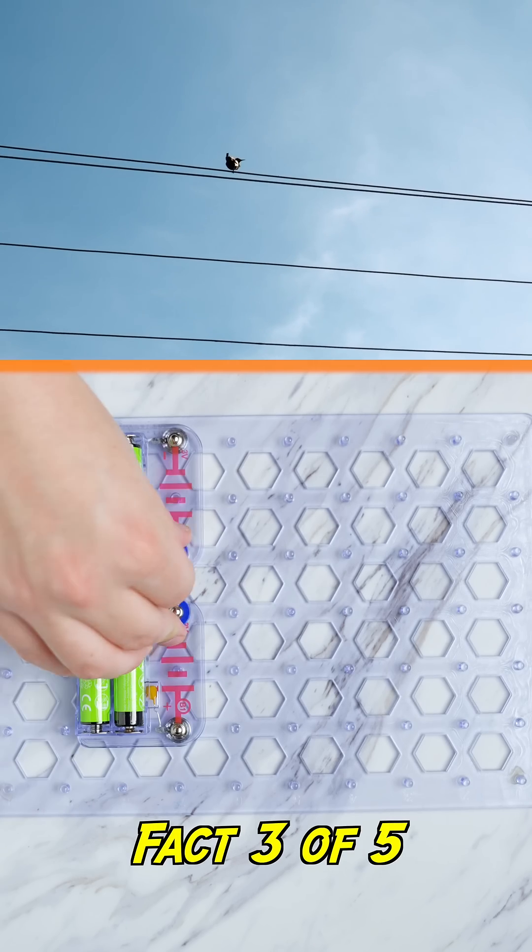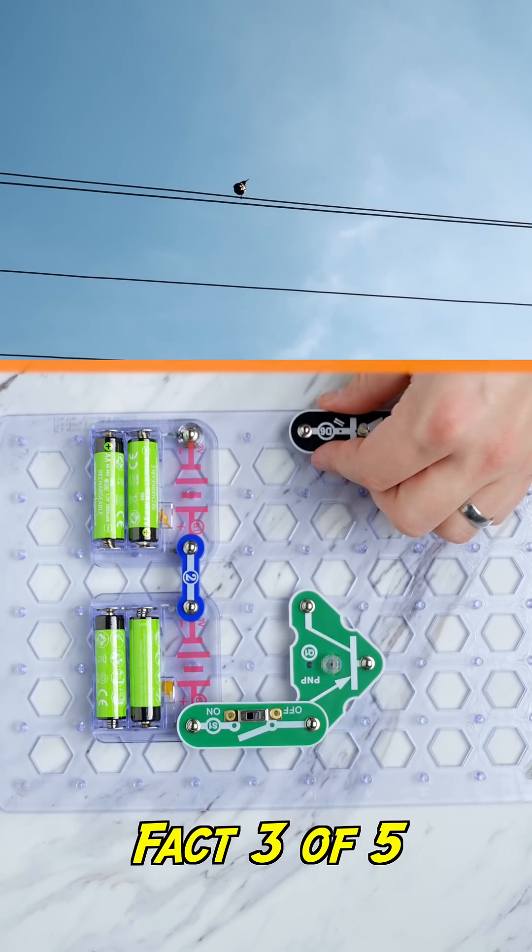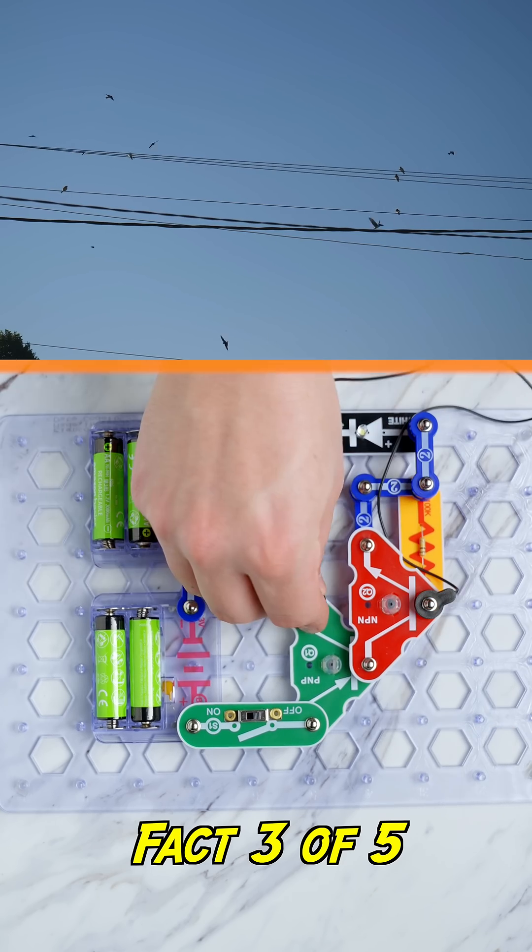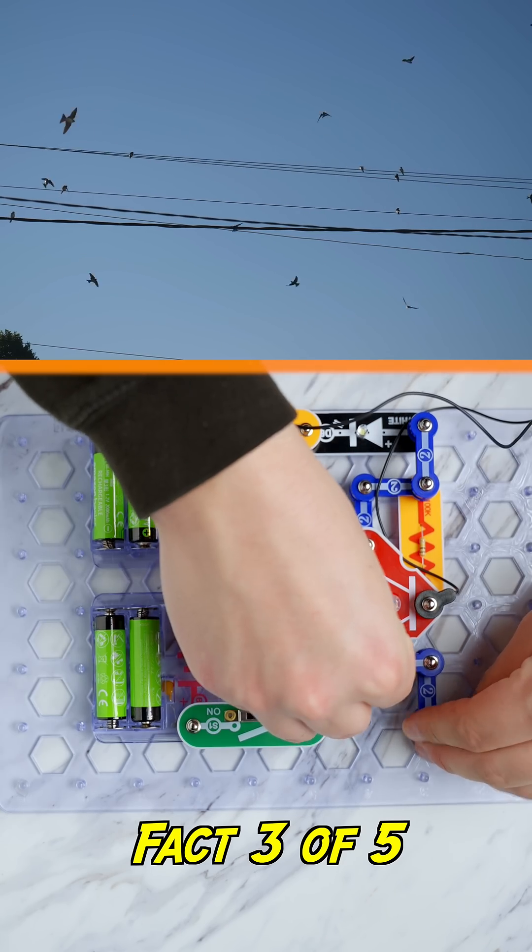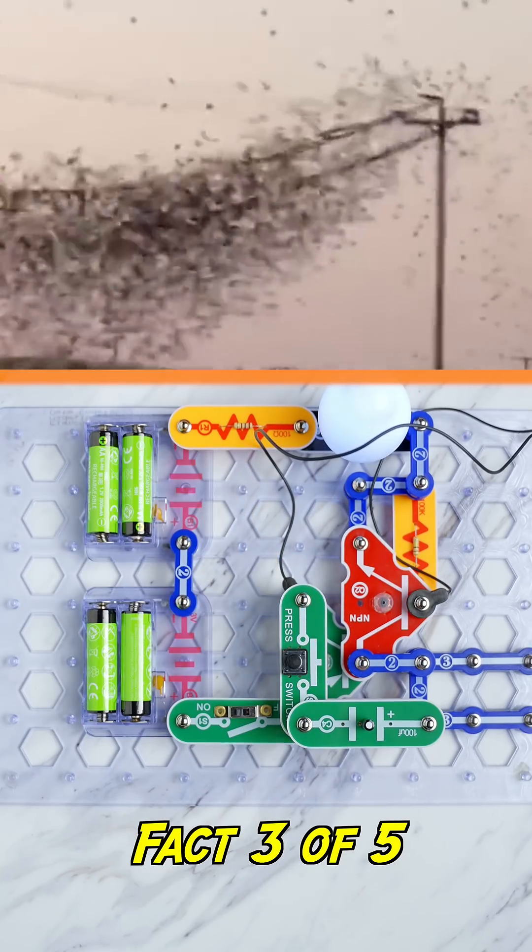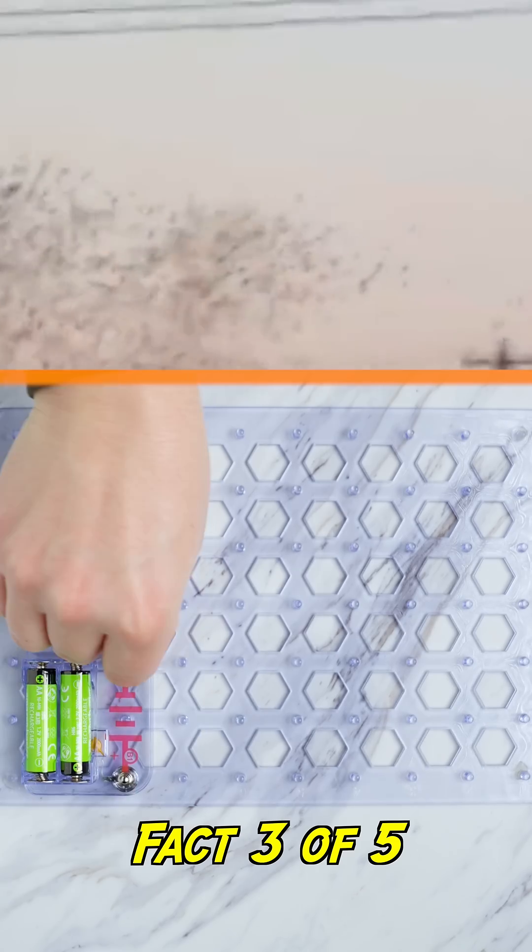Birds don't get electrocuted from flying on power lines because the electricity can only flow in a complete loop. They don't complete the circuit, and since electricity always seeks to return to its source, the birds aren't a good path. However, if they touch two power lines, they'll complete the circuit and suffer a horrible shock.